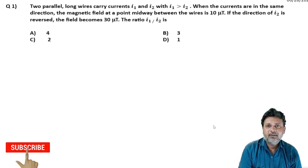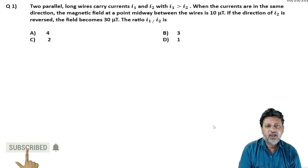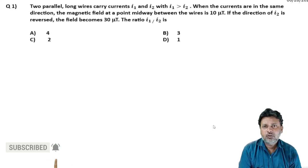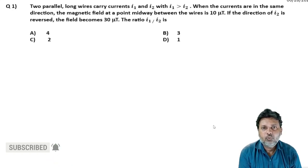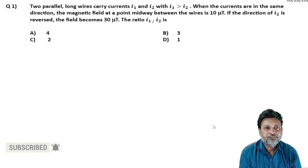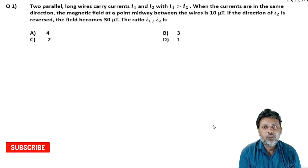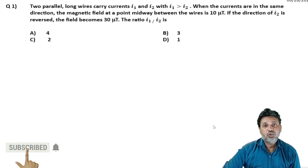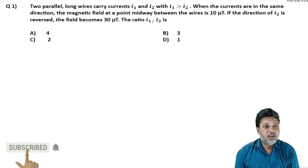Two parallel long wires carrying current I1 and I2 with I1 greater than I2. When the currents are in the same direction, the magnetic field at a point midway between the wires is 10 micro tesla. If the direction of I2 is reversed, the field becomes 30 micro tesla. Find the ratio of I1 and I2.